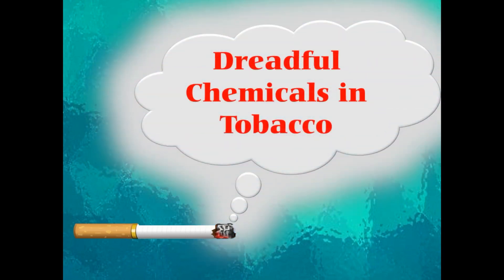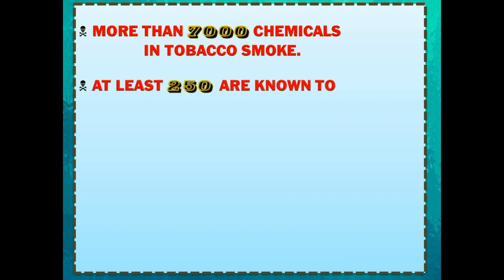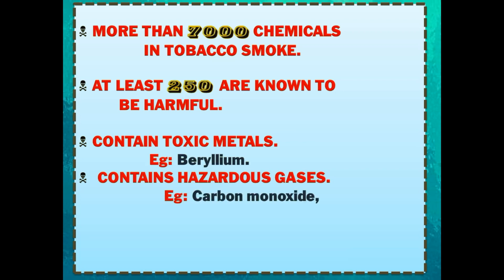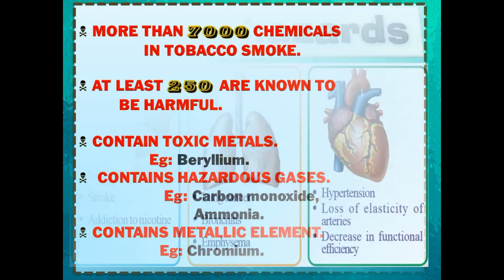The cigarette is the villain, containing dreadful chemicals. Cigarettes are made from tobacco and are available in different forms. Tobacco smoke contains more than 7,000 chemicals, out of which 250 are known to be harmful or carcinogenic — that means cancer-causing. It contains toxic metals like beryllium, hazardous gases like carbon monoxide and ammonia, and metallic elements like chromium.